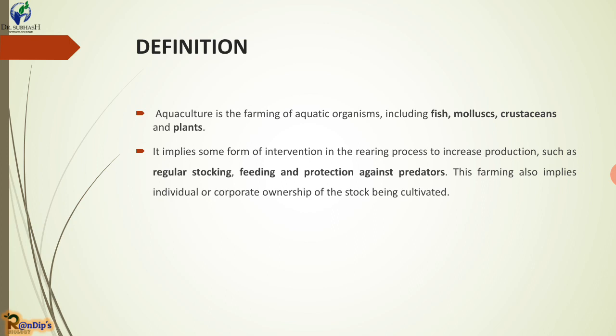Aquaculture is the farming of aquatic organisms, including fish, molluscs, crustaceans, and plants. In our Gujarat coastal area, Gujarat has 1650 kilometers of coastal line — it is the largest coastal area. In particular, we can discuss the Gulf of Khambhat area, where districts like Surat, Vapi, Valsad, and Navsari are major areas for aquaculture production.